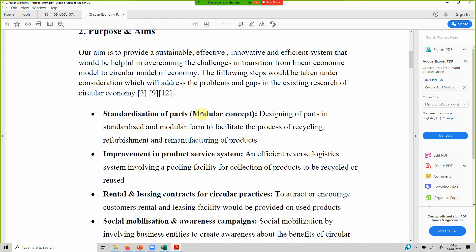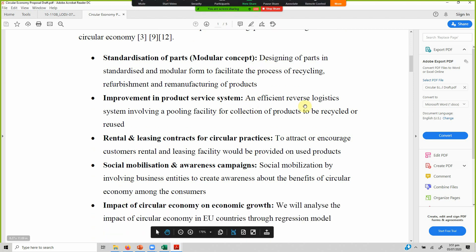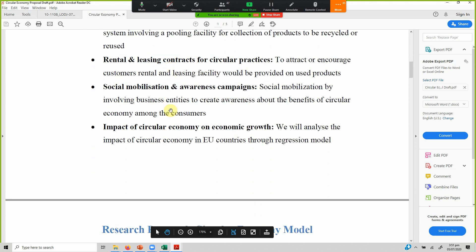So the scholar just jumps directly into the purpose and aims. And even the purpose and aims are not clear. Designing paths in standardized and modular form to facilitate the process of recycling. So it's a contrived study. They might be obviously thinking of changing what's happening on the ground. These are the objectives. They rather look like recommendations rather than study objectives.